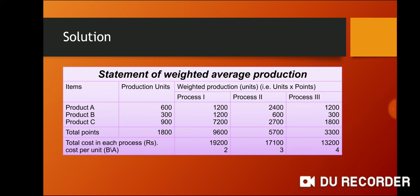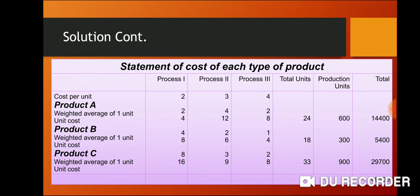Now we calculate the cost per unit. We calculate the cost per process. Now we are preparing the statement of the cost of each type of product. We calculate the cost per unit. Weighted average of one unit cost.